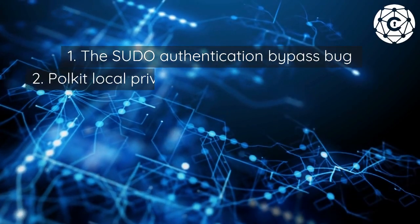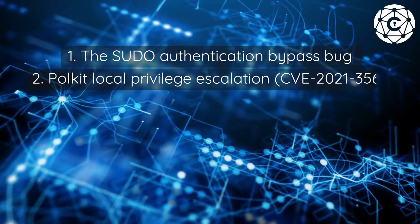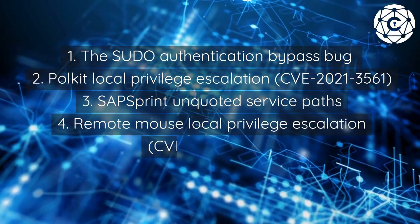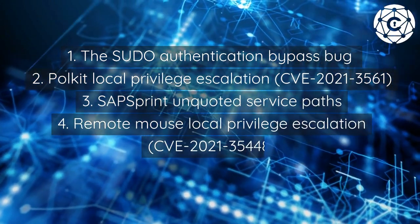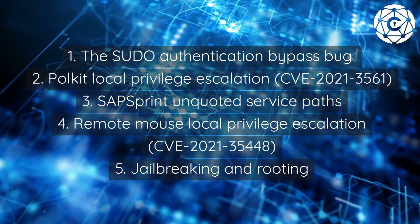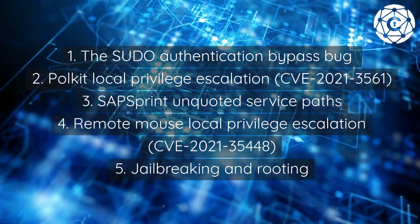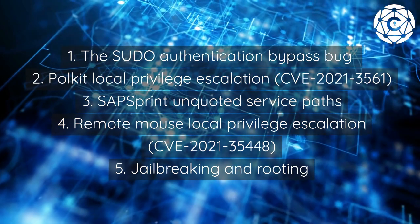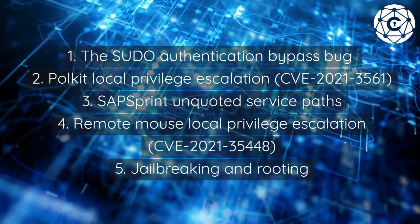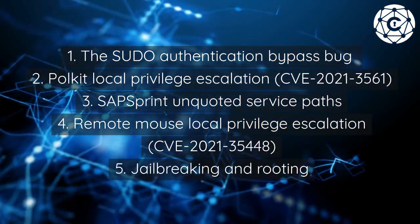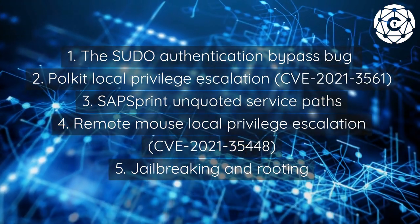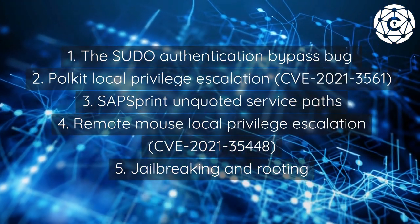Real world privilege escalation examples and attacks: one, the sudo authentication bypass bug; two, Polkit local privilege escalation 2021 (CVE-2021-3561); three, SAP Sprint unquoted service paths; four, Remote Mouse local privilege escalation 2021 (CVE-2021-35448).